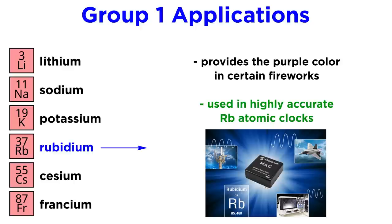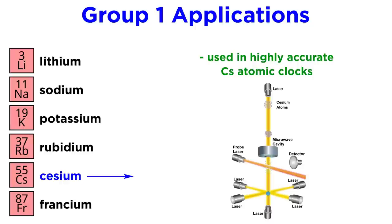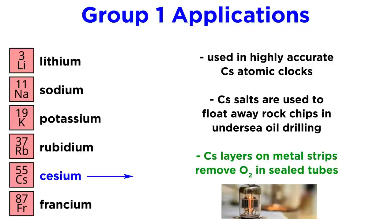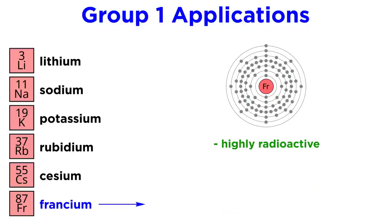Rubidium provides the purple color in some fireworks. Rubidium atomic clocks utilize a hyperfine transition in its ground state when interacting with microwaves, and these are highly accurate. Cesium is also known for atomic clocks. These utilize the same principle as the rubidium variety but are even more precise, though they are more expensive. Additionally, cesium salts are dense enough to be used to float away rock chips in undersea oil drilling, and cesium layers on metal strips can be used to remove all traces of oxygen in sealed tubes.